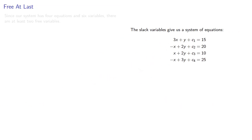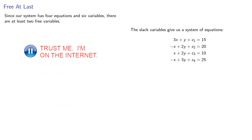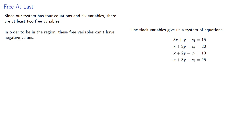Since our system has four equations and six variables, there are at least two free variables. And in order to be inside the region, these free variables can't have negative values. Now, because they're free variables, we can guarantee this by not giving them negative values.